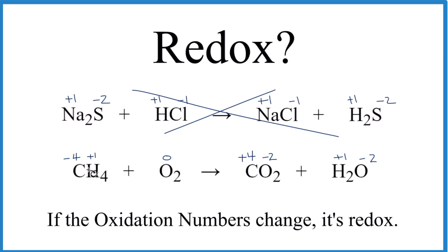But down here, carbon goes from a negative 4 to a positive 4. Hydrogen stays the same, but oxygen, because it's O2, a free element, it's zero here. And in the products, we have negative 2 and negative 2. So this is a redox reaction because the oxidation numbers change.